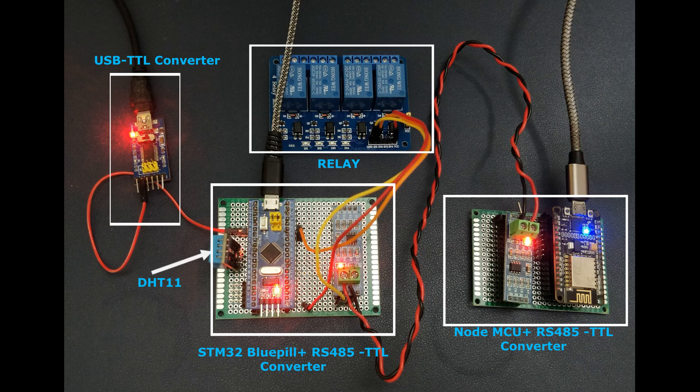Now let's check out the hardware setup. We are using STM32 blue pill and NodeMCU as our microcontrollers. The STM32 blue pill has a DHT11 sensor as well as a relay connected to it. The DHT11 sensor data is communicated from the blue pill to the NodeMCU over Modbus RTU communication, and the NodeMCU then pushes the received data onto the Adafruit MQTT server.